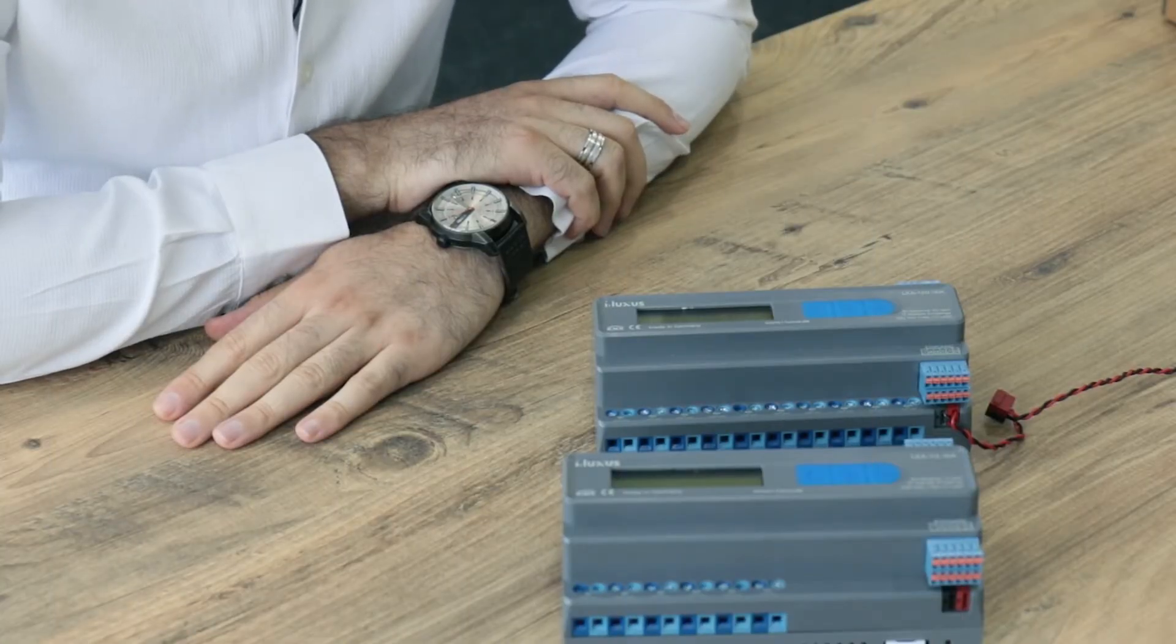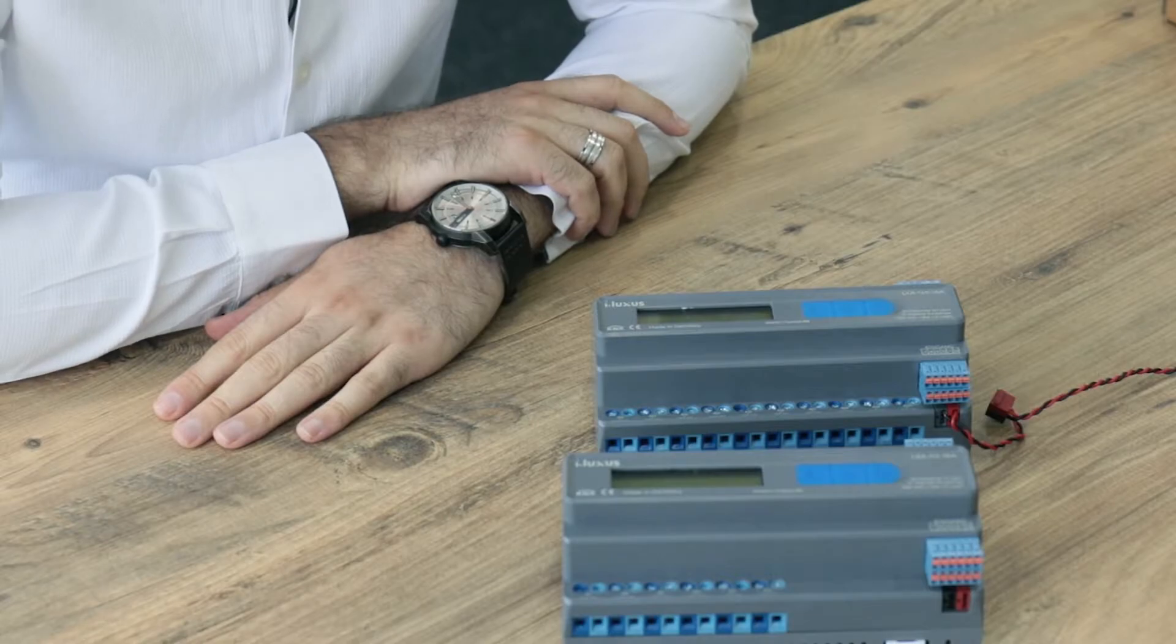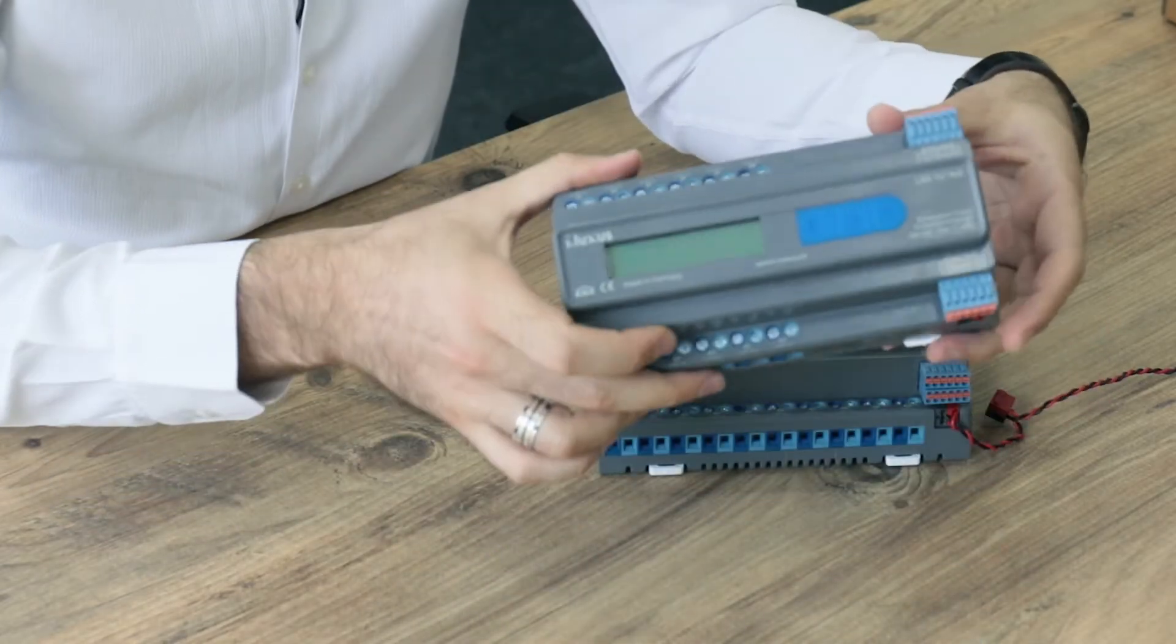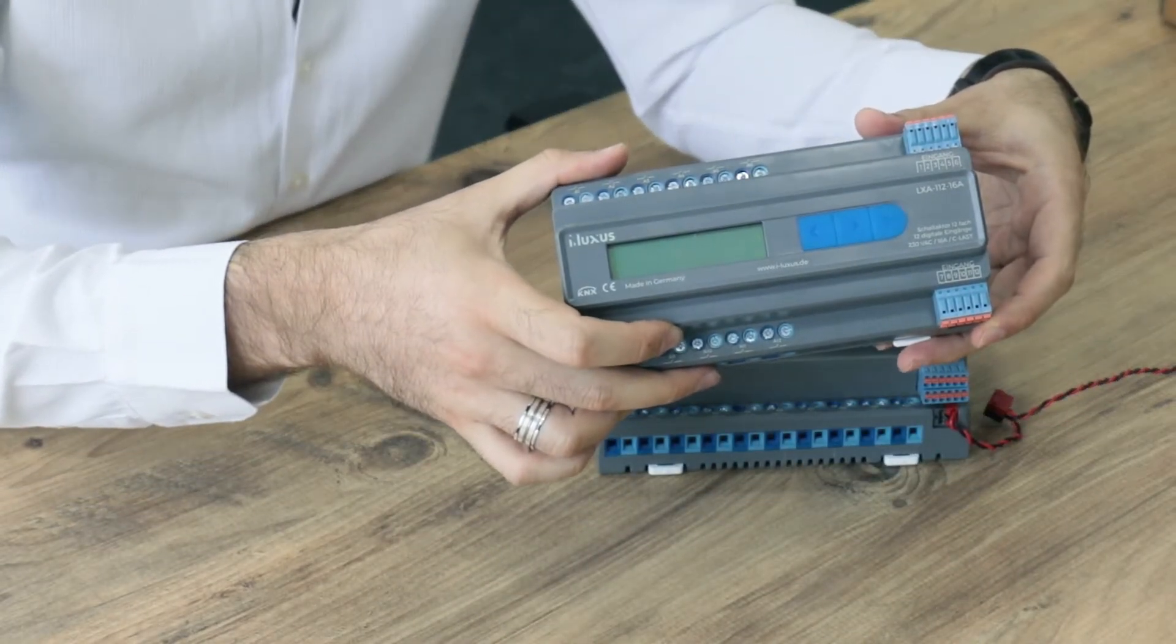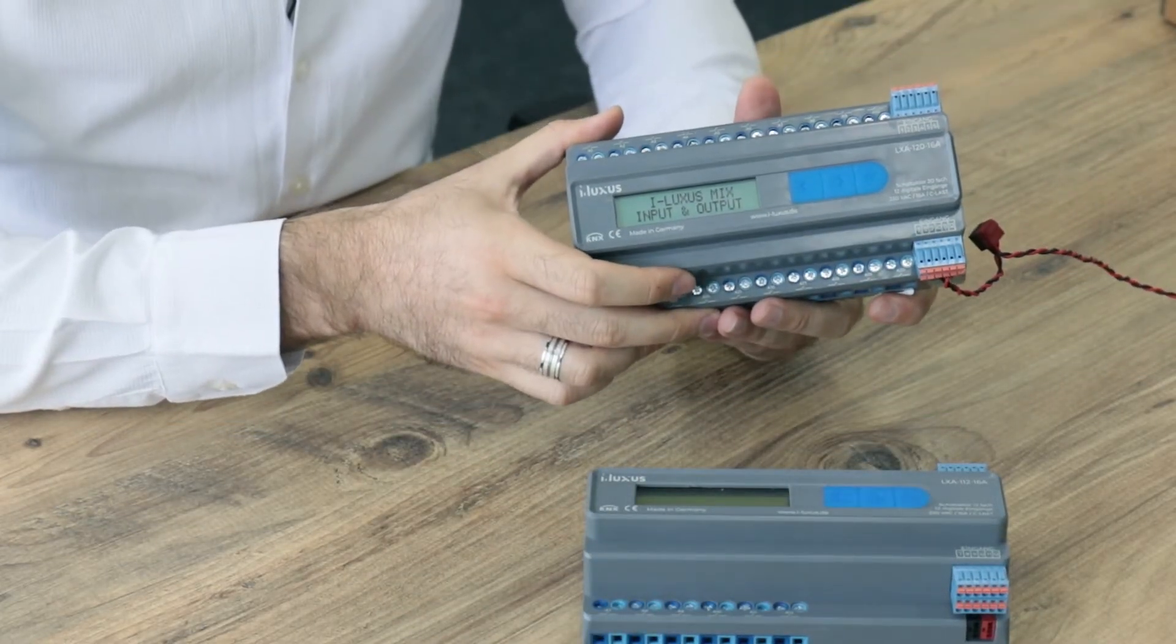Hello again. In this video, we will talk about our mix actuator. In the iLuxus product range, we have two actuators. The first one is a 12-channel mix actuator, and the second one is a 22-channel mix actuator.